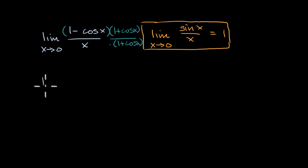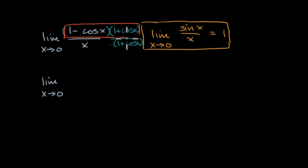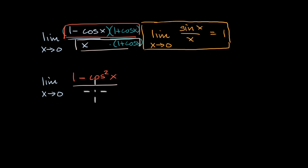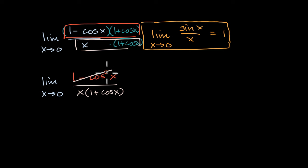But what does that do for us? Well, I can rewrite the whole thing as the limit as x approaches zero. One minus cosine of x times one plus cosine of x — that is going to be one squared, which is just one minus cosine squared of x — difference of squares. And in the denominator I have x times one plus cosine of x. Now, one minus cosine squared of x comes straight out of the Pythagorean trig identity: this is the same thing as sine squared of x.